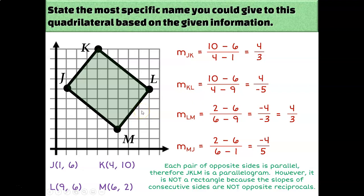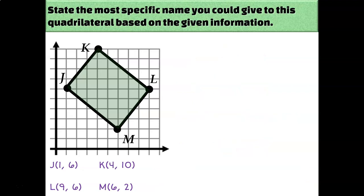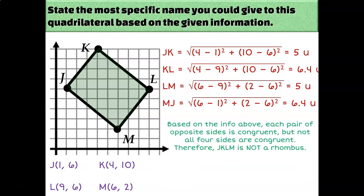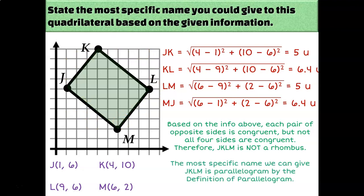It doesn't really look like a rhombus — it doesn't look like all four sides are congruent — but we do have to prove whether or not it is, because that's the next most specific type of parallelogram it could be. So let's calculate each of our distances. It turns out that each pair of opposite sides are equal, but not all four sides are equal.